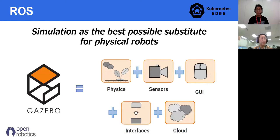Gazebo is the simulation tool constructed on physics, sensors, and interfaces, including the UI. You can switch between the real world and the simulation world easily, and the application is agnostic from this choice. You can develop the application without any hardware, just simulation at the very first place. Using ROS and Gazebo, you can have everything you need to develop your robotics application. Now let's get back to the main topic, which is Kubernetes-related.